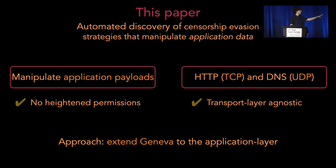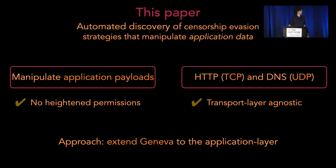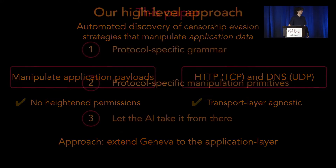To achieve this, we're going to expand upon Geneva. In essence, we need to fuzz in the application layer. There's a subtlety here because most fuzzers are concerned with finding one input to break a server, but we're concerned with finding ways to manipulate existing traffic to evade censorship. Geneva did that at the TCP/IP layer, and we're expanding Geneva to work that way for the application layer.